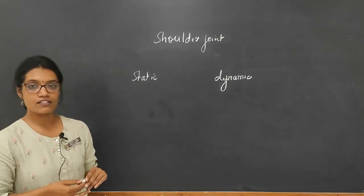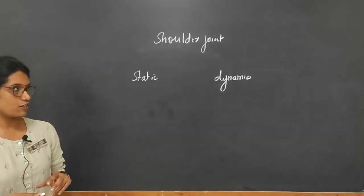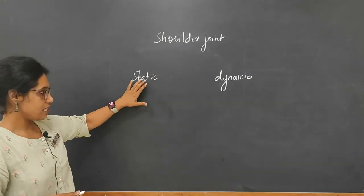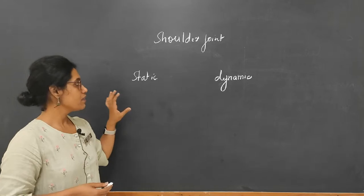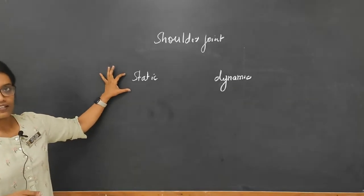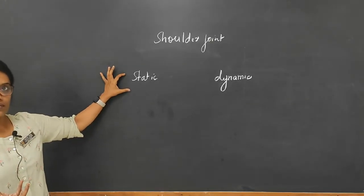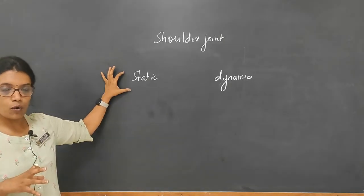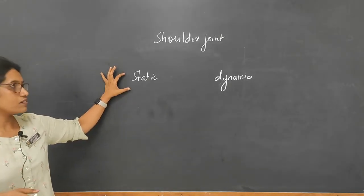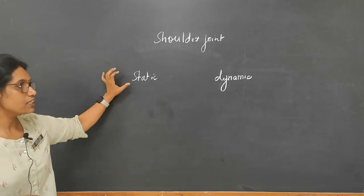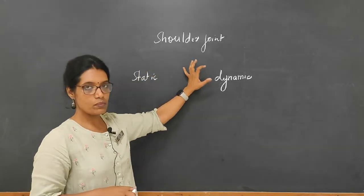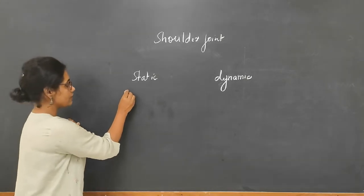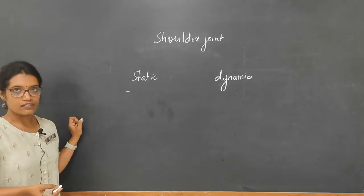Today we discuss factors that contribute to stability at the shoulder joint. Basically, you can divide these factors as static and dynamic. By static, we understand it would be mostly with respect to the skeletal component as well as the capsular ligamentous component — inert structures that contribute to shoulder stability. The dynamic component will be supplied by our muscles.